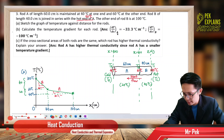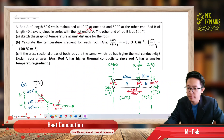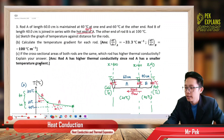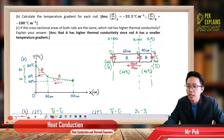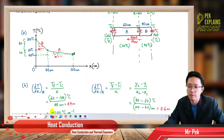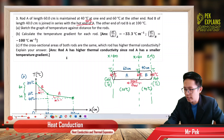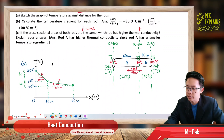The temperature gradient for rod A is negative 33.3°C/m and for rod B is negative 100°C/m. Now, if the cross-sectional area for both rods is the same, which rod has a higher thermal conductivity? We learned before that the rod with the bigger temperature gradient has a smaller thermal conductivity, and the rod with the smaller temperature gradient has a bigger thermal conductivity.